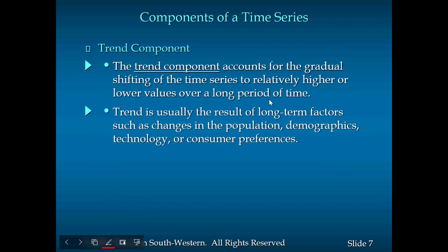The trend component accounts for the gradual shifting either upward or downward. Trend is usually the result of long-term factors such as changing population — if population increases, sales usually go up or down depending on the nature of the business. Demographic changes, such as movement of population from one town or city to another, can cause big changes in the trend. Technology change and consumer preferences also have an impact on the trend component.